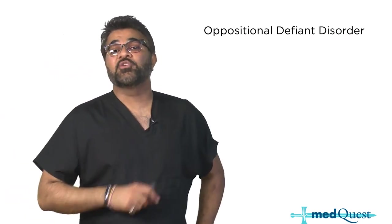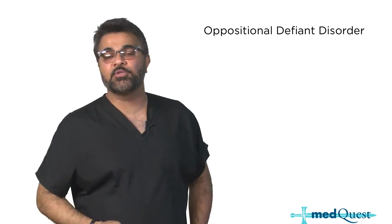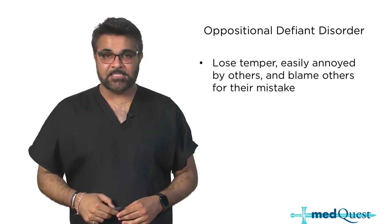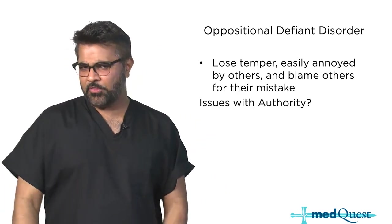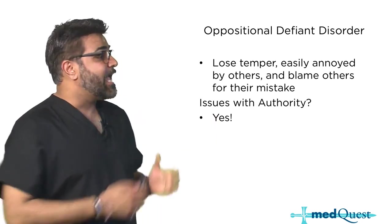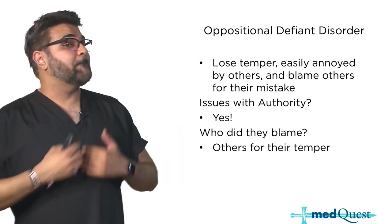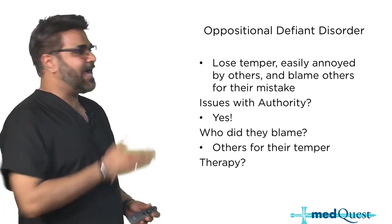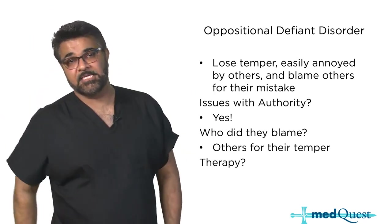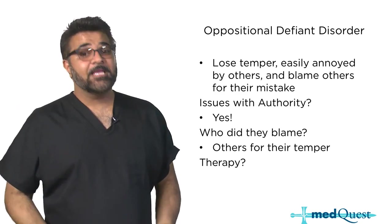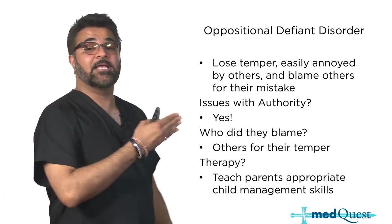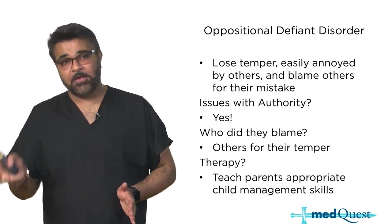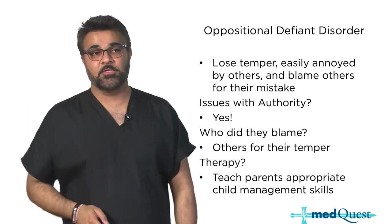Oppositional defiant disorder occurs in children. In ODD, they lose their temper easily, they're annoyed by others, and they blame others for their mistakes. Do they have issues with authority? Overwhelmingly yes. And they'll blame everybody else - 'my temper is not my problem, you made me angry.' The therapy for ODD is essentially anger management for children. You have to tell the parents appropriate child management skills, and sometimes group therapy with the child and adult on appropriate child management skills.